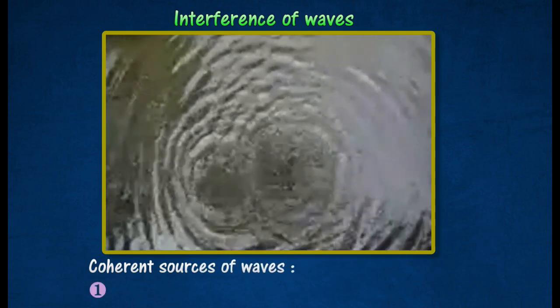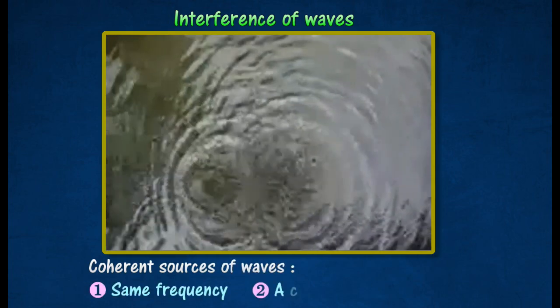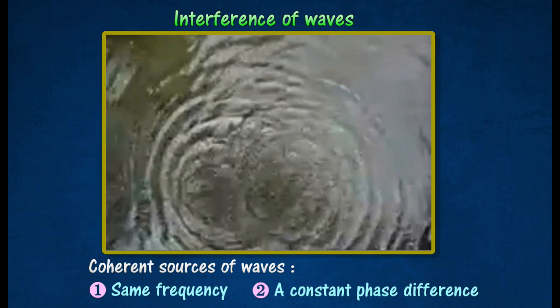Coherent sources of waves produce waves of the same frequency and a constant phase difference.